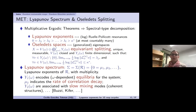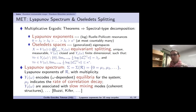Going back to the transfer operator in the infinite-dimensional setting, we will have possibly countably many Lyapunov exponents — these are like logarithms of the Ruelle–Pollicott resonances. The Oseledets space Y_j is a finite-dimensional space associated to each Lyapunov exponent, with a complement where vectors decay faster. We call the Lyapunov spectrum sigma, listing the exponents with multiplicity.